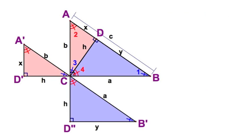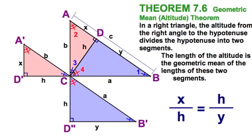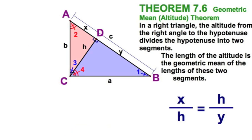The second theorem has to do with this segment — the altitude to the hypotenuse. This segment H is the geometric mean between X and Y, the two segments of the hypotenuse. I can see it more clearly here — this is where it comes from. Looking at these two triangles: X is to H as H is to Y. Folding them back up: X is to H as H is to Y. That is where the altitude to the hypotenuse is the geometric mean between the two segments of the hypotenuse.